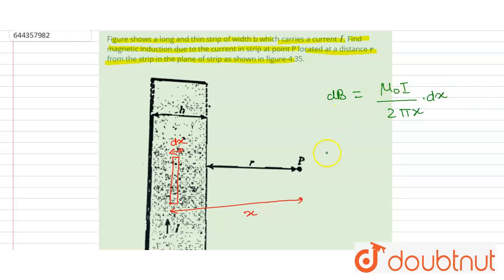And for the total magnetic field, integrated dB will be μ₀I divided by 2π integration.